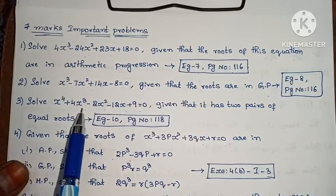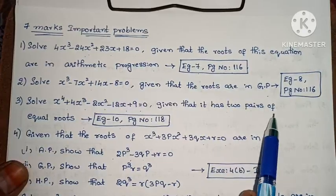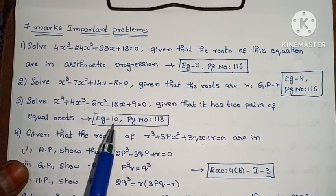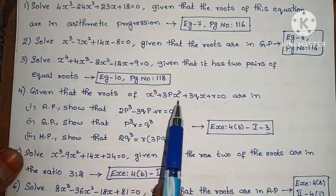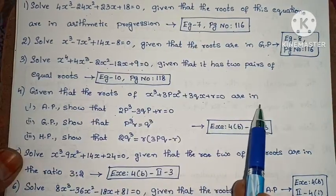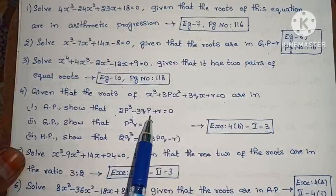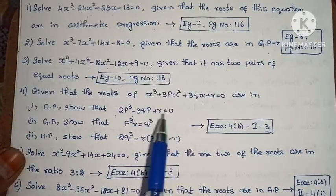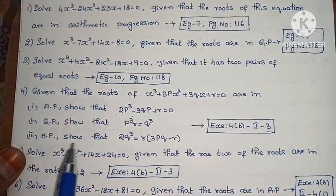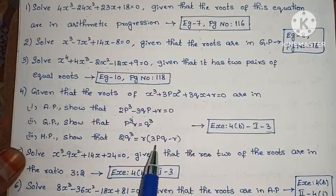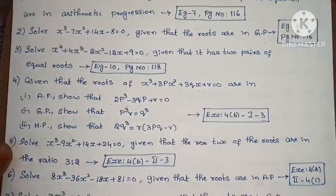Next, solve x⁴ plus 4x³ minus 2x² minus 12x plus 9 equals 0, given that it has two pairs of equal roots. Example 10, page number 118. Next, given that the roots of x³ plus 3px² plus 3qx plus r equals 0 are in AP, show that 2p³ minus 3qp plus r equals 0; if in GP, show that p³r equals q³; if in HP, show that 2q³ equals r(3p³ minus r). Exercise 4A, first Roman numeral, third one.